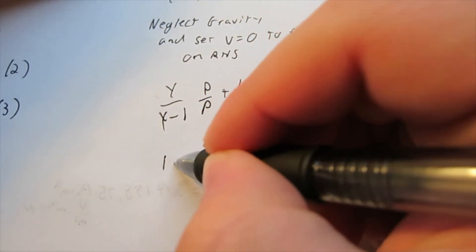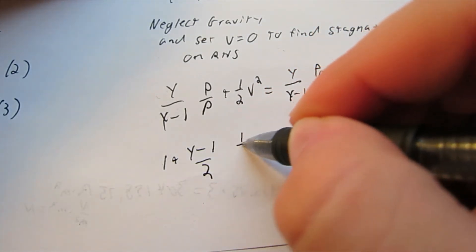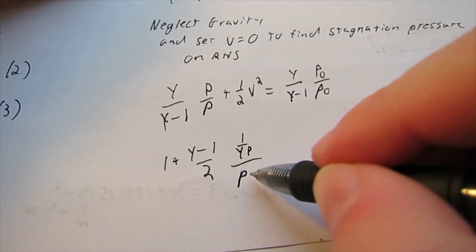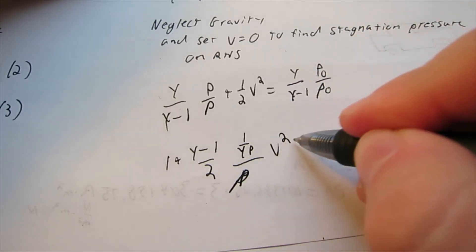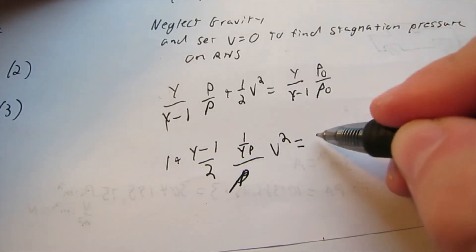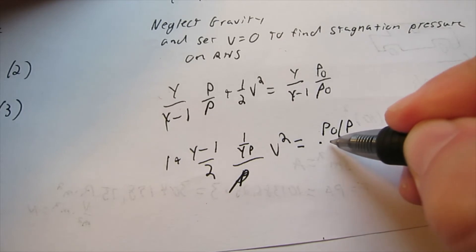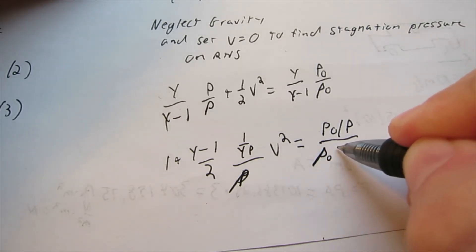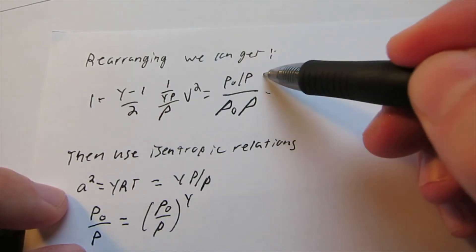Now rearranging things again, we can write this as 1 plus gamma minus 1 divided by 2, then 1 divided by gamma P divided by density, this is ρ, density, V squared equals P_0 divided by P divided by, again, stagnation density times density.